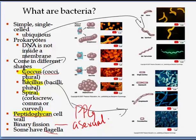Some bacteria also have flagella. Flagella is a hair-like structure which helps the bacterial cell to move — it helps in its locomotion.